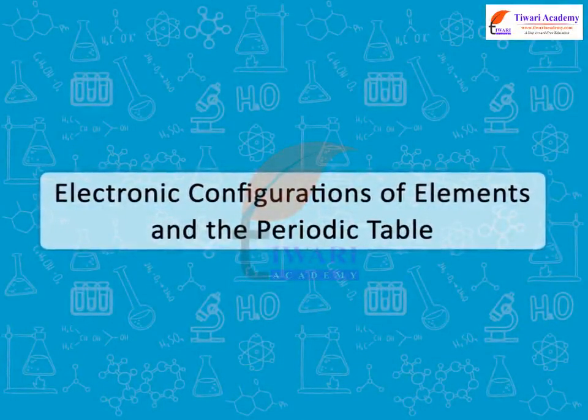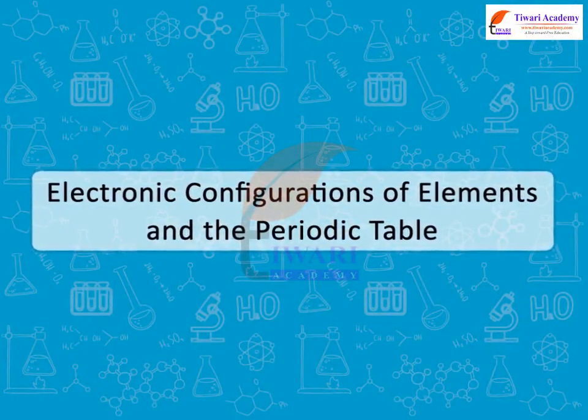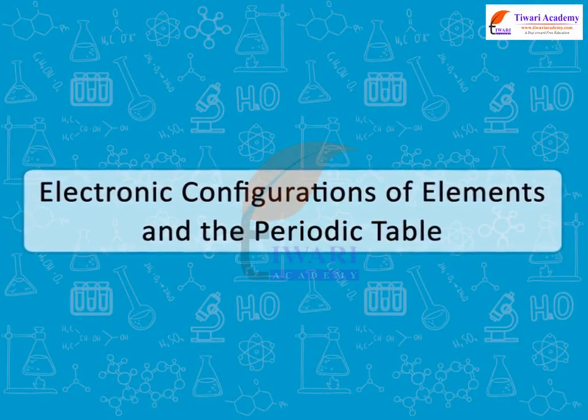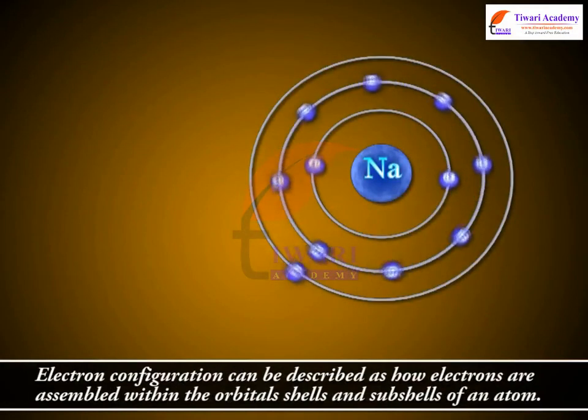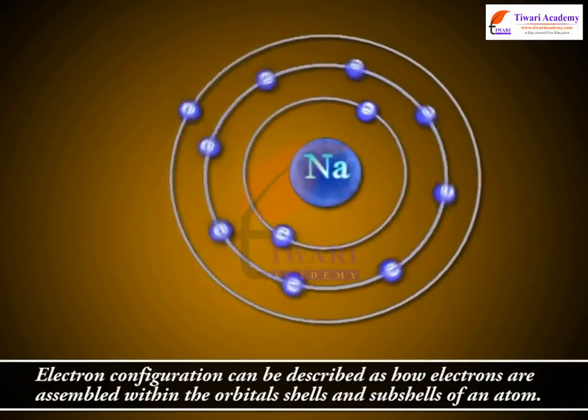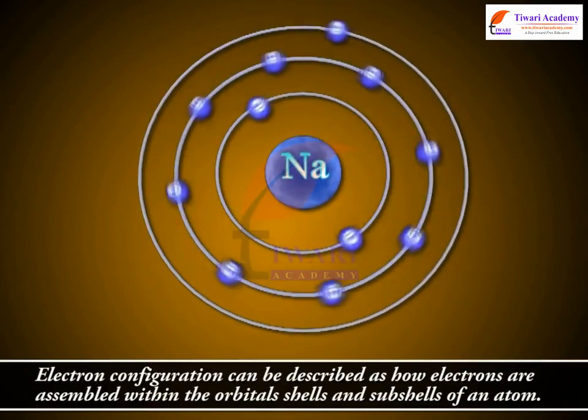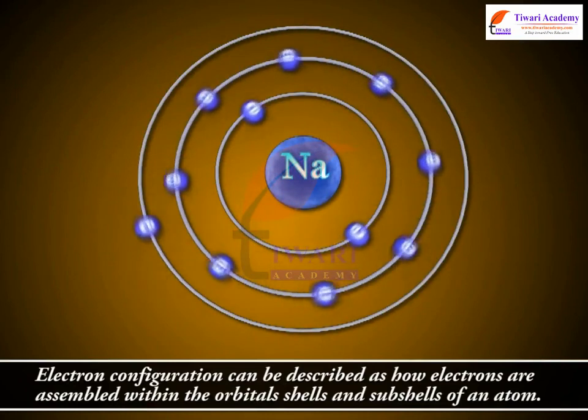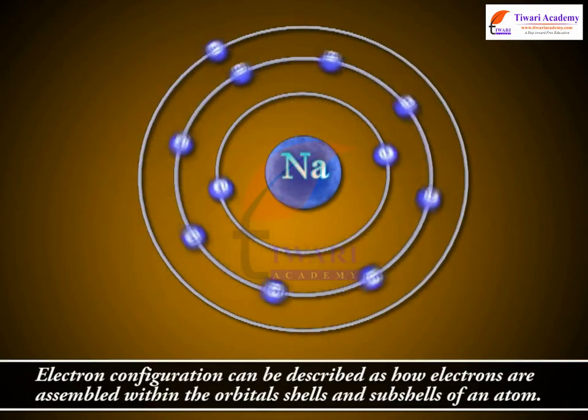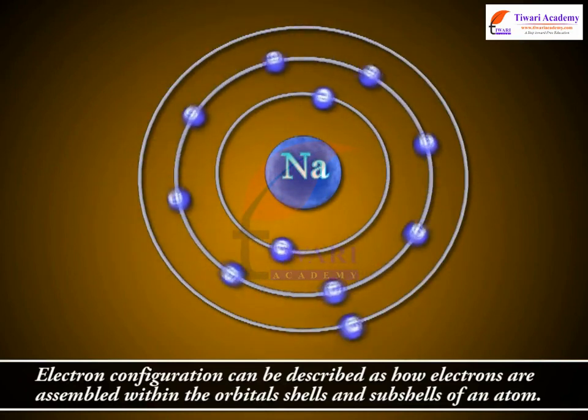Electronic configurations of elements and the periodic table. Electronic configuration can be described as how electrons are assembled within the shells, orbits, and subshells, orbitals, of an atom.